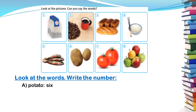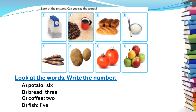B, bread. So what is the number of bread? It is three. Very good, it is number three. C, I give you coffee. So coffee is number two. D, fish. Fish, number five.